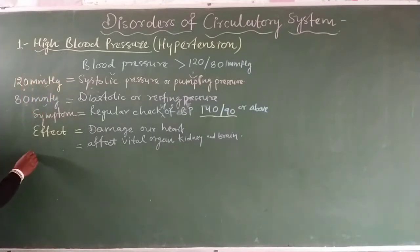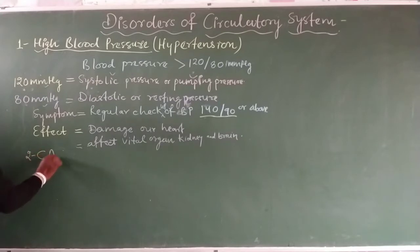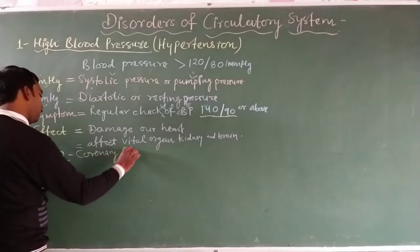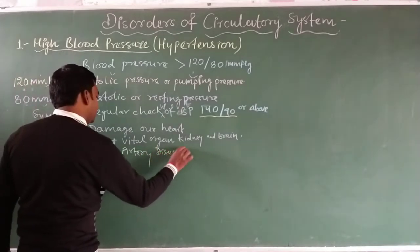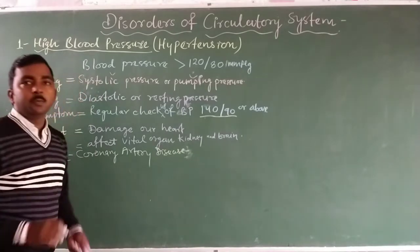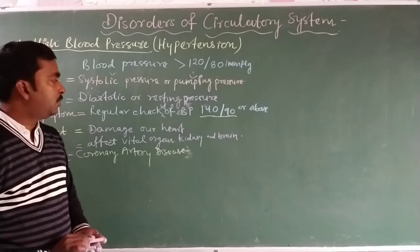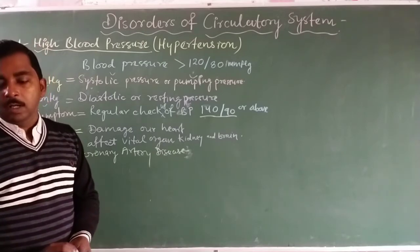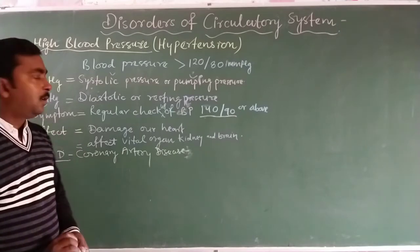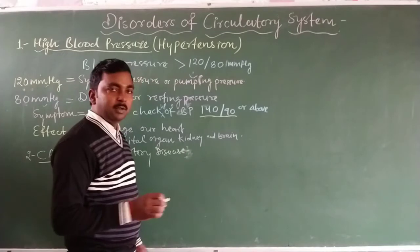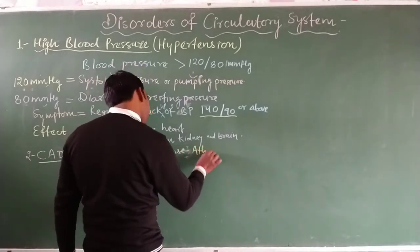The second disorder related to our circulatory system is CAD, Coronary Artery Disease. It is a disease caused due to insufficient blood supply to the heart, resulting from damage or blockage of the blood vessels that supply blood to the heart. These blood vessels are known as coronary arteries, and this disorder is also known as atherosclerosis.